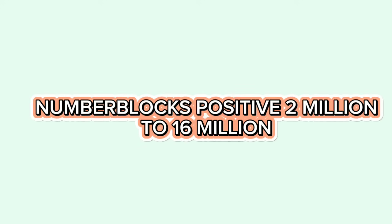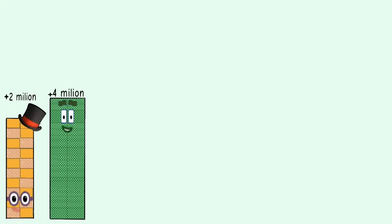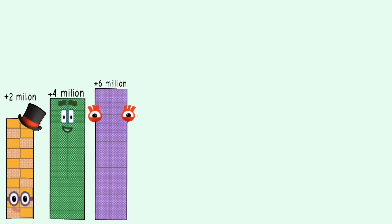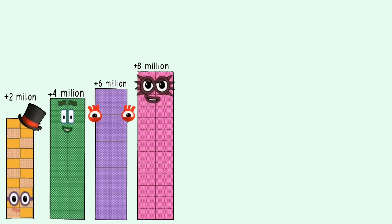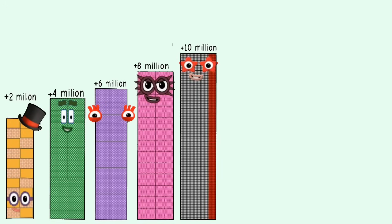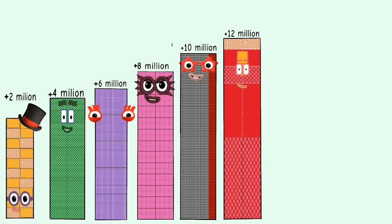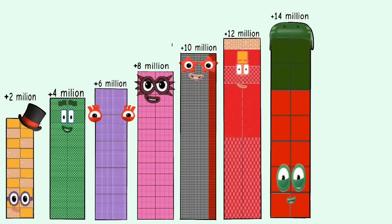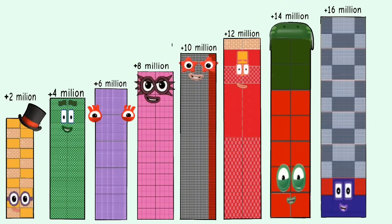Number blocks positive 2 million to 16 million. Positive 2 million. Positive 4 million. Positive 6 million. Positive 8 million. Positive 10 million. Positive 12 million. Positive 14 million. Positive 16 million.